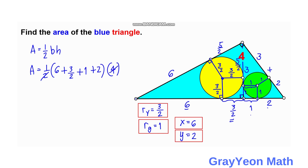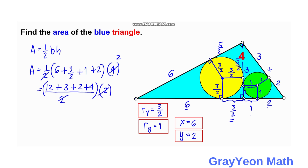Simplifying: 1/2 × 4 = 2, and 6 + 1 + 2 = 9, plus 3/2. Getting a common denominator of 2: (18/2 + 2/2 + 4/2 + 3/2) = 27/2. Then 2 × 27/2 = 27... working through the arithmetic: 12 + 3 + 2 + 4 = 21. So the area is equal to 21 square units, and that is our answer.